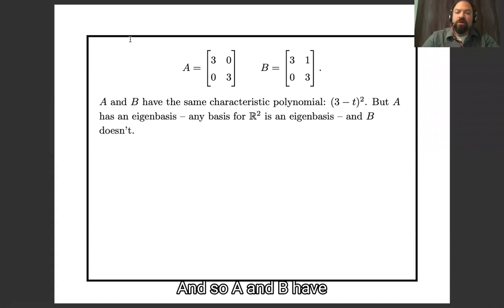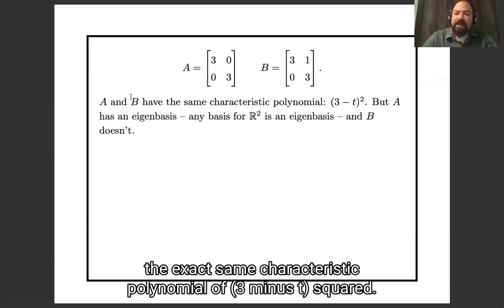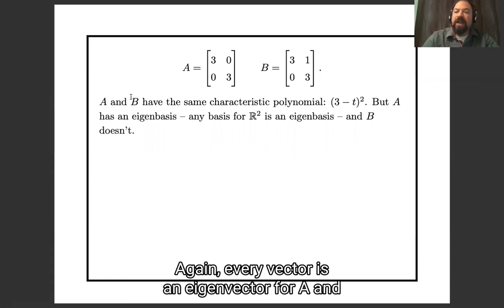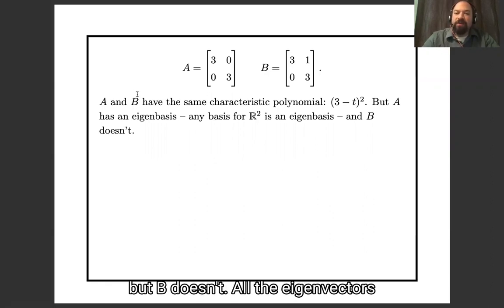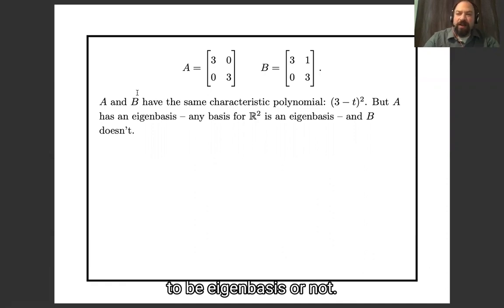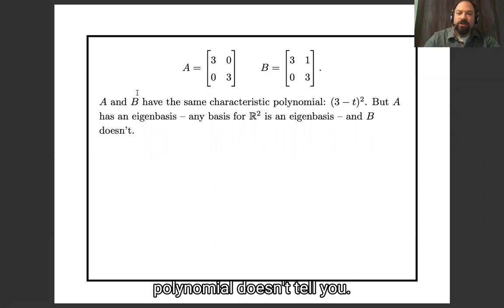So A and B have the exact same characteristic polynomial, (3 minus t) squared. But A has an eigenbasis — every vector is an eigenvector for A — and B doesn't. All the eigenvectors of B lie in a one-dimensional subspace. So in the case of repeated roots, it's not clear whether we'll have an eigenbasis or not, and looking at the characteristic polynomial doesn't tell you.